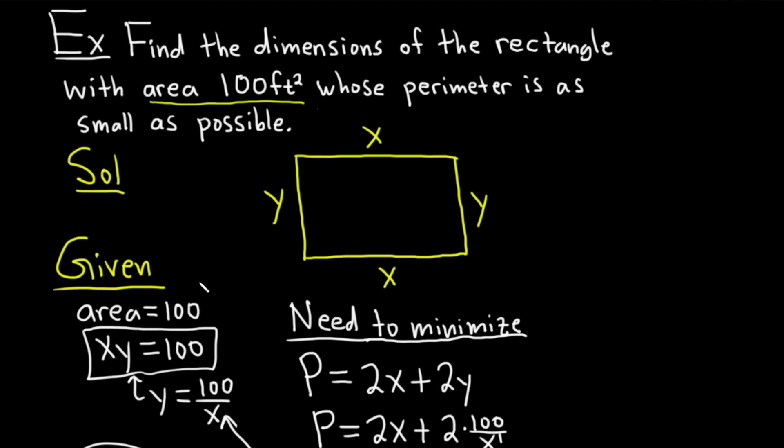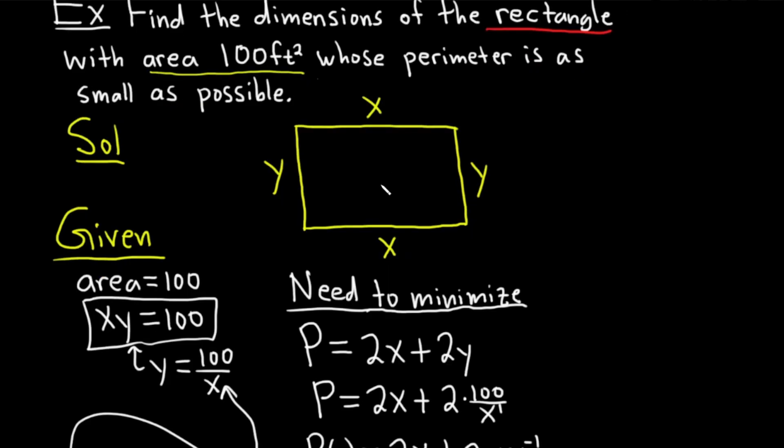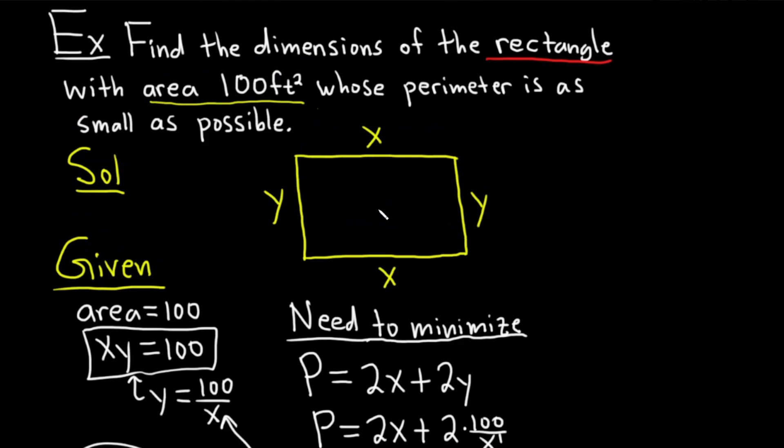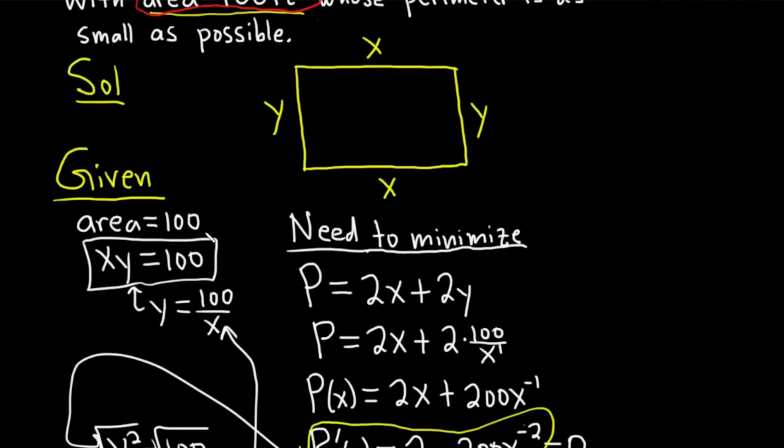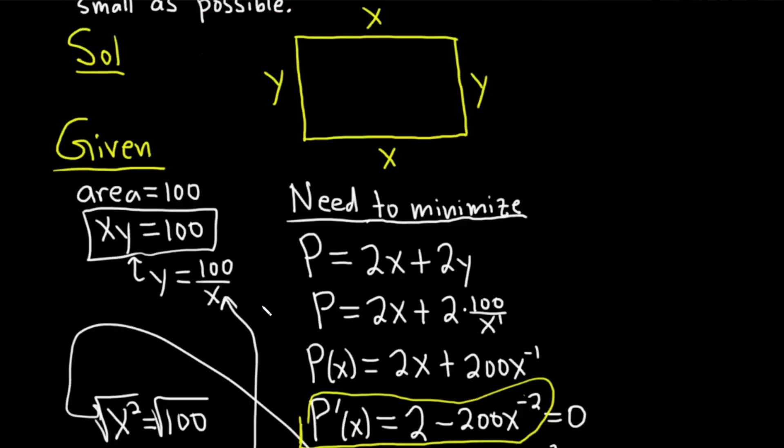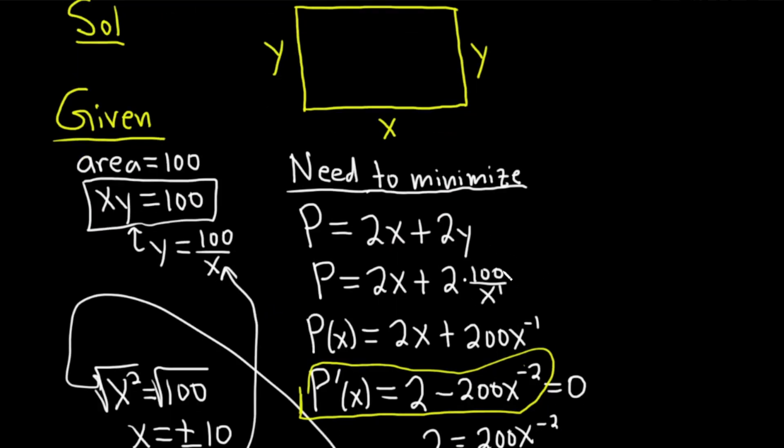So we write down a picture of the rectangle because it's talking about a rectangle. We labeled everything x and y. We're given that the area is 100 feet squared, so that means that x times y is 100. And we need to minimize the perimeter, which is the sum of the lengths of the sides. So that was 2x plus 2y. Then we take our other equation, solve for y, and then plug it into our function P.